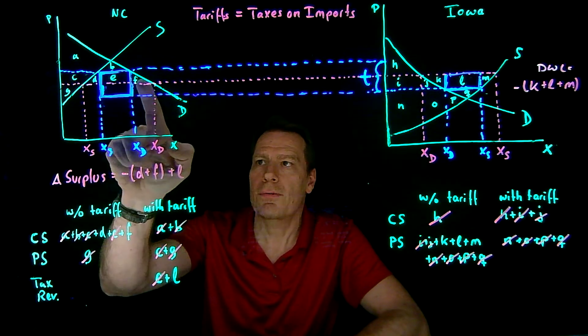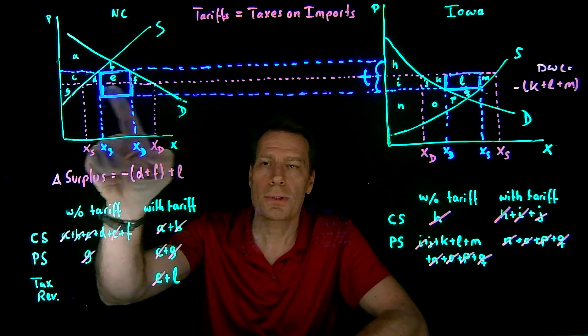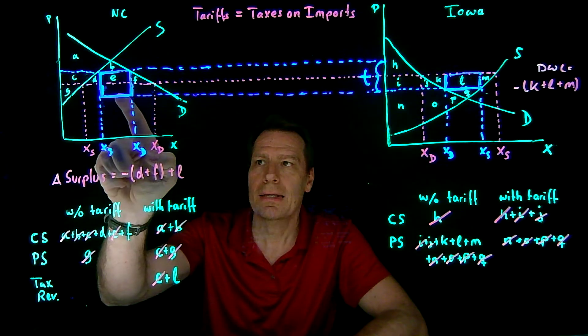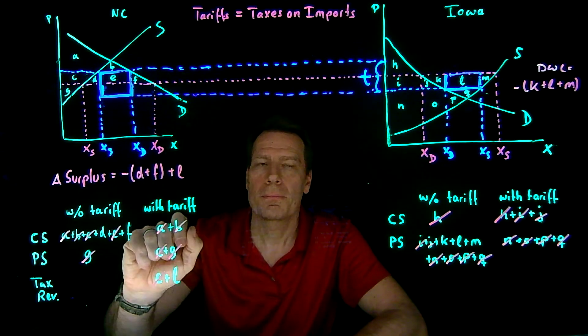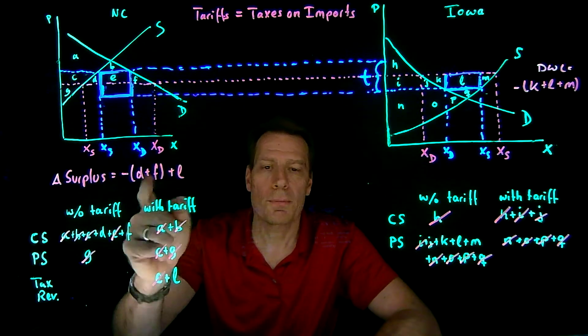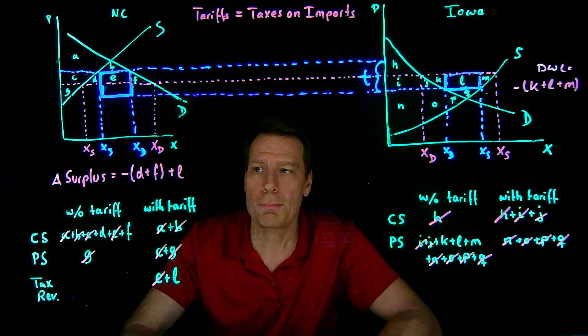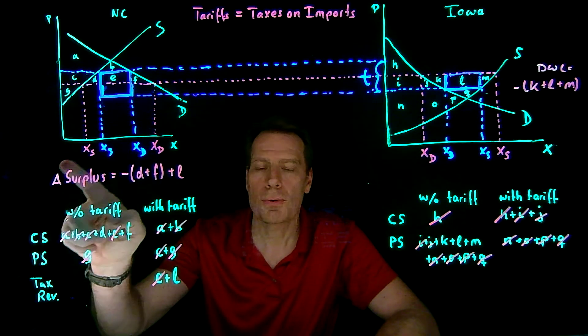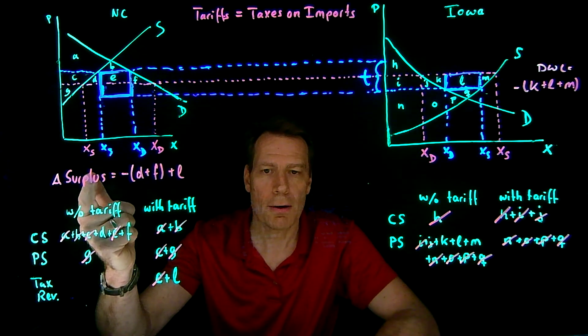So D and F are these triangles in here. We're losing those. But we're gaining L, this area down here, which is equal to that area over here. It's unclear which one's bigger. It could be that overall surplus in North Carolina is actually increasing as a result of the tariff.